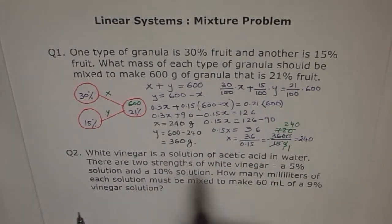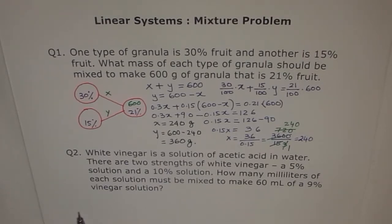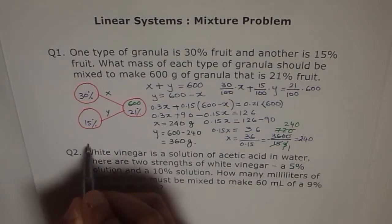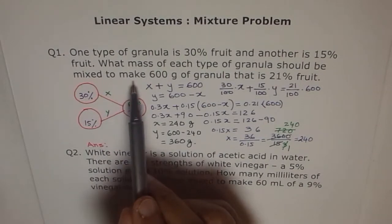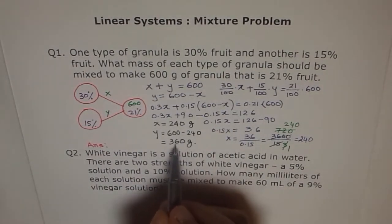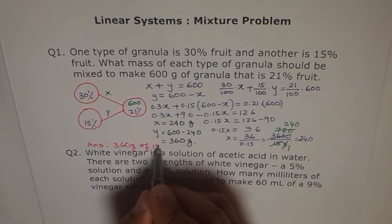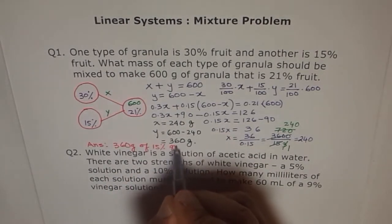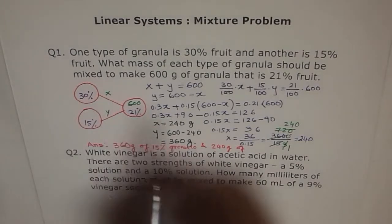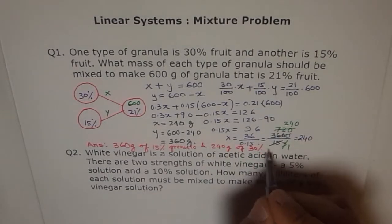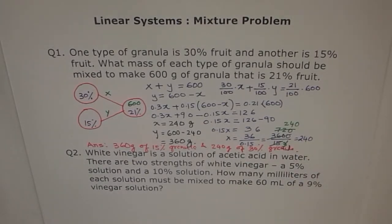I am running out of space. I am not writing the answer statement, but in a word problem it is a must to write answer in a statement. Otherwise 0.5 marks will be deducted. So you write here 'Answer.' And what will you write in the answer? Read the question: what mass of each type of granula should be mixed? So we say 360 grams of the 15% solution granula and 240 grams of the 30% fruit granula should be mixed to give us 600 grams of granula. That completes our solution.